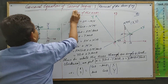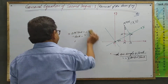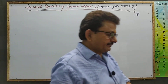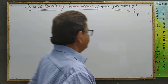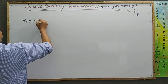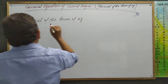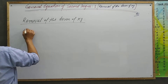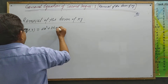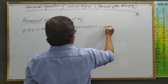Removal of the term of x·y — note: x into y, not just x and y — from the general equation of second degree φ(x, y) = 0. φ(x, y) is: ax² + 2hxy + by² + 2gx + 2fy + c = 0. This is equation number (1). We want to remove the 2hxy term from this.